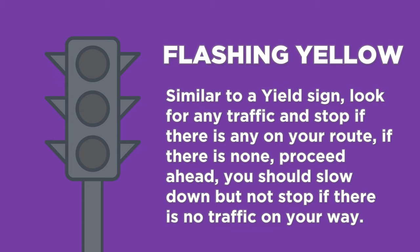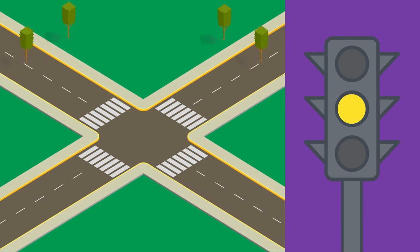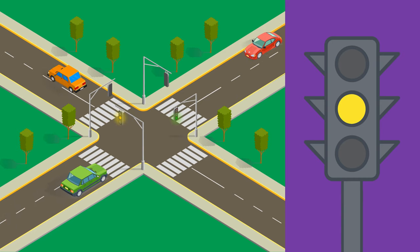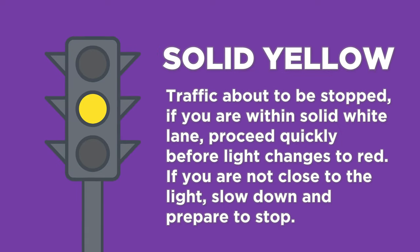Flashing yellow light: look for any traffic and stop if there is any on your route. If there is none, proceed ahead. You do not have to stop at a flashing yellow light if there is no traffic. You are allowed to turn right but with reduced speed — be cautious as you cross the intersection.